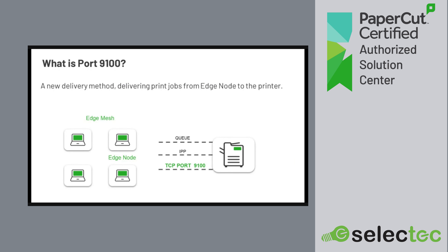Good morning everyone, and thank you for staying on the webinar. A little bit of exciting news: in Hive, we're now notifying of Port 9100. It's going to be released probably in the next four to six weeks. It can be enabled by PaperCut — if you want this enabled on your org ID, please reach out to SelectTech. We've brought in the traditional Port 9100. Part of the first remit was to bring in manufacturer driver and queue deployment, which then allowed us to bring in Port 9100. Instead of delivering a print queue via IPP, you can now deliver a job on TCP Port 9100.